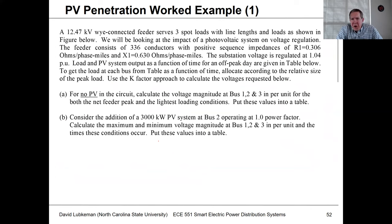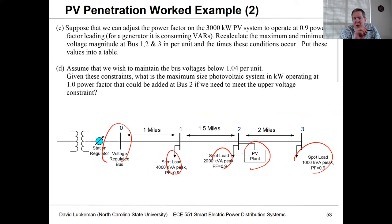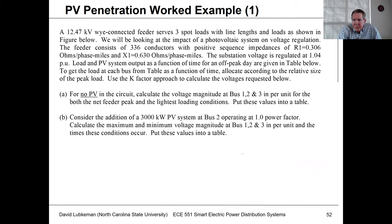Here's a more numerical example, similar to what will be in Homework 8. We have a 12.47 kV feeder. We have a voltage-regulated bus at the top, loads on the circuit, and we're looking at putting a PV facility at location number two. We're going to use K-factor analysis for this circuit, regulating the top of feeder to 1.04 per unit. I have 336 conductor for the backbone with specific resistances and reactances per mile.